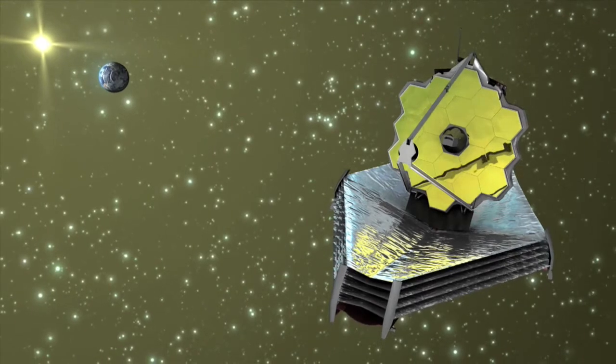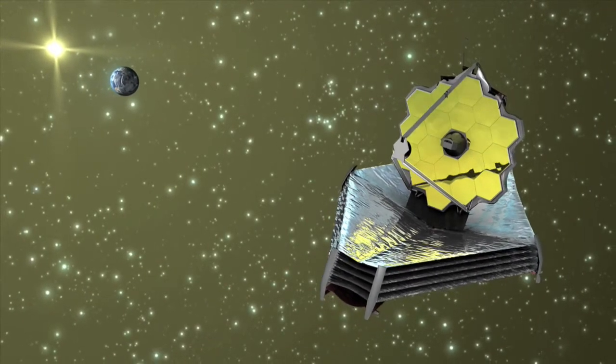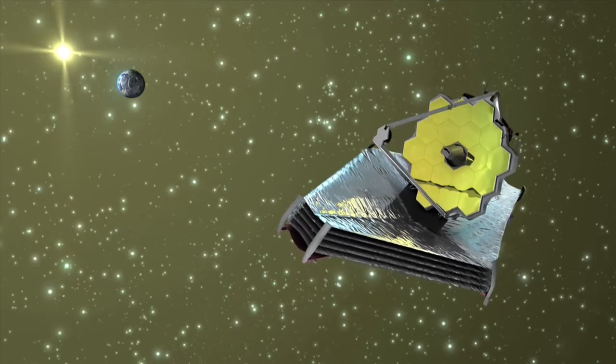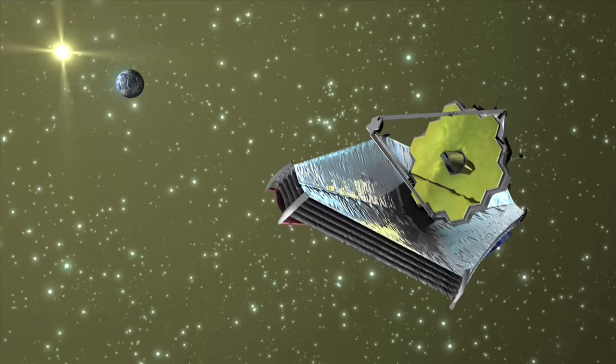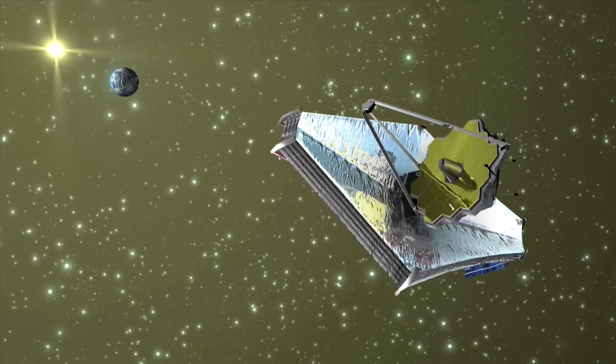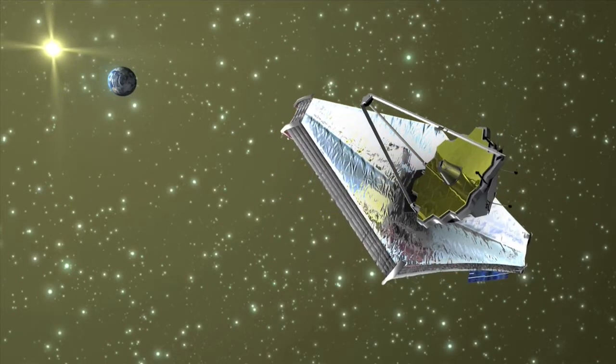Therefore, the James Webb Space Telescope's four scientific instruments will be protected from these objects by a tennis court-sized sunshield, as well as being placed at the second Lagrange point L2, an orbit where the Sun, Earth and Moon will be in the same direction at all times.